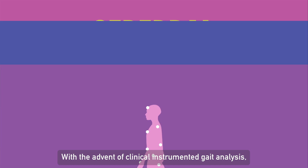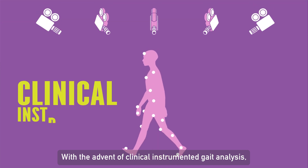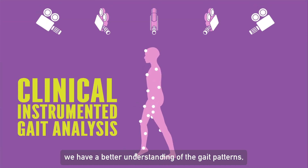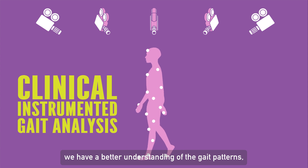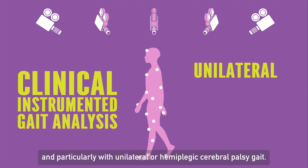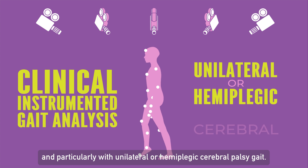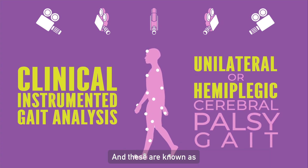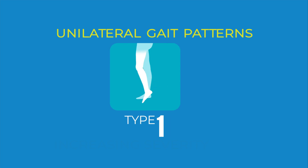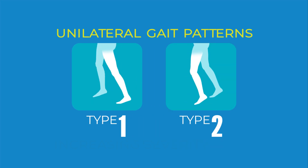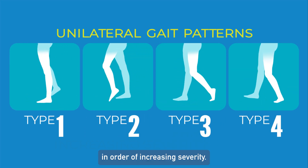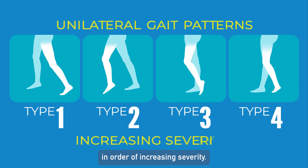With the advent of clinical instrumented gait analysis, we have a better understanding of the gait patterns, and particularly with unilateral or hemiplegic cerebral palsy. These are known as types 1, 2, 3, and 4 in order of increasing severity.